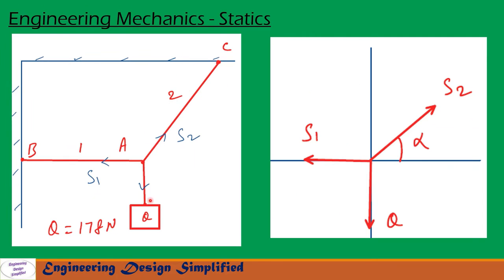Let us transfer all these forces and reactions onto the XY plane. On this XY plane, we have Q acting vertically downwards, S1 acting horizontally in this direction, and S2 acting in this direction. The angle between S2 and the horizontal is alpha, which we just calculated as 12.53 degrees.